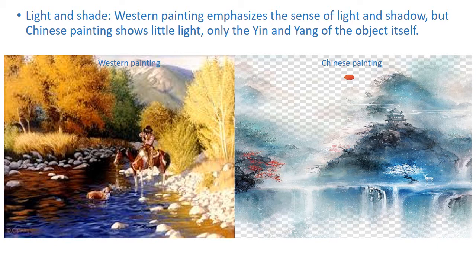Light and shade: Western painting emphasizes the sense of light and shade, like a window. But Chinese painting shows little light and shade — only the inherent contour and volume of the object itself. Here is the example for Western painting, and here is a Chinese painting example.